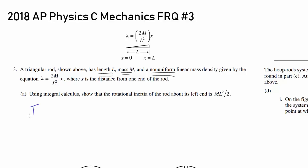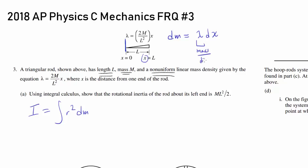How do you calculate rotational inertia? You integrate R squared DM. In our case, R squared is simply X, because you're looking at the distance from X equals zero. But how do you find DM? DM is equal to lambda times DX, because lambda is linear mass density — that's mass per distance. So if you multiply by distance, you get differential mass.